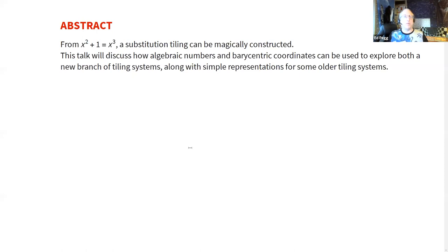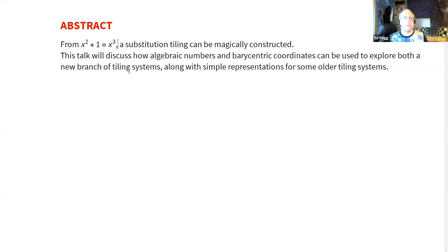Without further ado, let me turn it over to Ed, and he's going to tell us about new substitution tiling concepts and the super golden ratio. The way I'm going to start is by taking this simple polynomial x² + 1 = x³, and I will magically construct a new tiling system out of nowhere. Then I'll talk about some of the other techniques I use to find these new tiling systems.